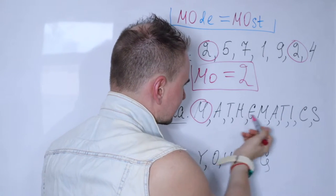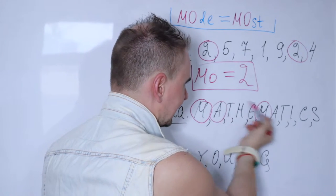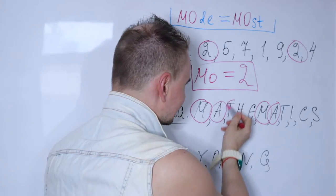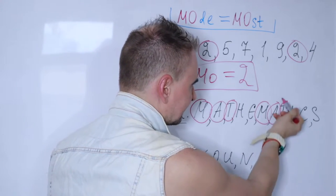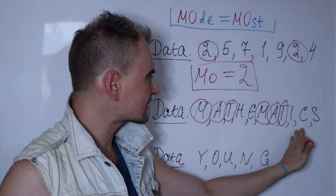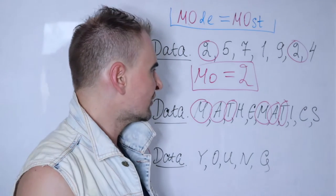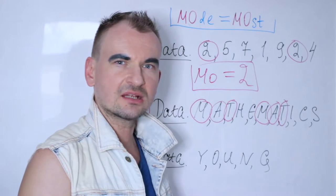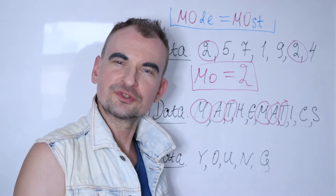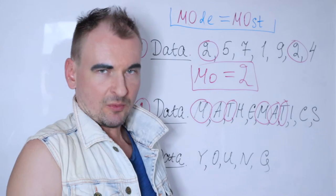You have two M's, you also have two A's, and you have two T's. If you look at other letters carefully, all of them are different, distinct. So it seems like you have three modes. Can you have three modes?